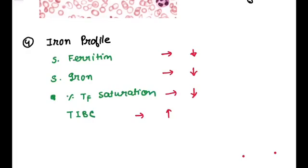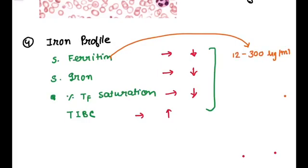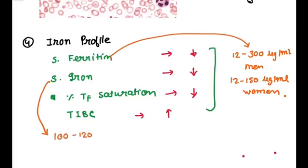Now we will see the normal value of all these parameters. First of all, serum ferritin. The normal value of serum ferritin is 12 to 300 microgram per ml for men. Normal range for serum iron is 100 to 120 microgram per dl. Percentage saturation of transferrin is 33%. This is the normal range. Please note this point.